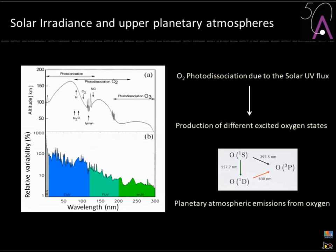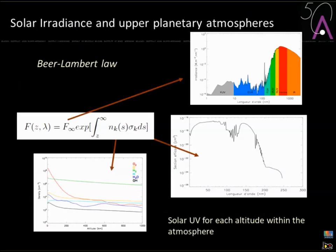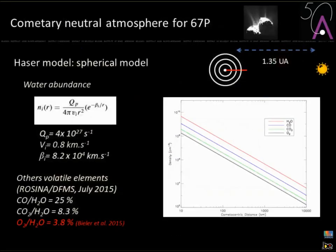To model this, we use the Beer-Lambert-Bouguer law to assess the solar UV flux at each altitude within the atmosphere, taking into account absorption at each layer. For this you need: the solar UV flux (or stellar flux for non-solar-system science), the cross sections — the interaction probability between the UV flux and the molecules — and of course a neutral atmosphere model.